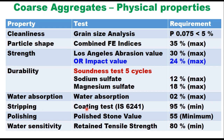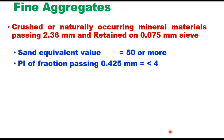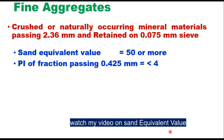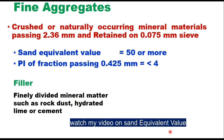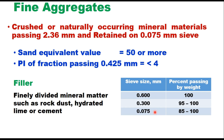The stripping test determines aggregate coating and requires minimum coating of 95%. Polished stone value should be 55 or more and retained tensile strength on bituminous mix should be at least 80%. Fine aggregates are crushed or naturally occurring mineral materials passing 2.36 mm and retained on 75 microns sieve. The sand equivalent value should be 50 or more and plasticity index of fraction passing 425 microns should be less than 4. The filler is a finely divided mineral material such as rock dust, hydrated lime or cement, satisfying gradation requirements: passing 600 microns 100%, passing 300 microns 25 to 100%, and passing 75 microns 85 to 100%.